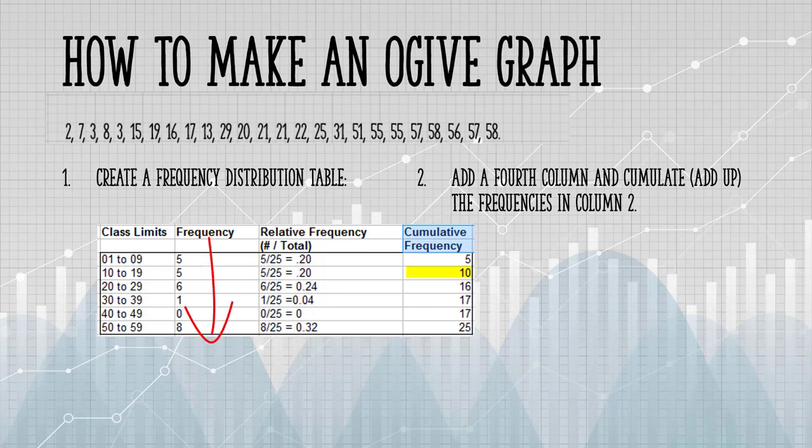For example, the second row is the sum of the first and second entries in the frequency column. That's 5 plus 5 equals 10. The third entry is the sum of the first, second and third rows in the frequency column. That's 5 plus 5 plus 6 equals 16.